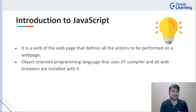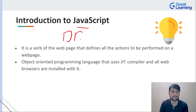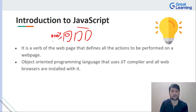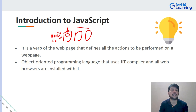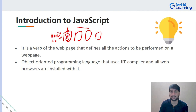Now let's understand the introduction of JavaScript. When you talk about a website, it is a collection of web pages clubbed together. Whenever you are structuring your web page, that is done with HTML. Then you want to style it — that is done with CSS or frameworks like Bootstrap. Now, whenever you want to click or perform any actions on this web page, that is where JavaScript comes into picture.